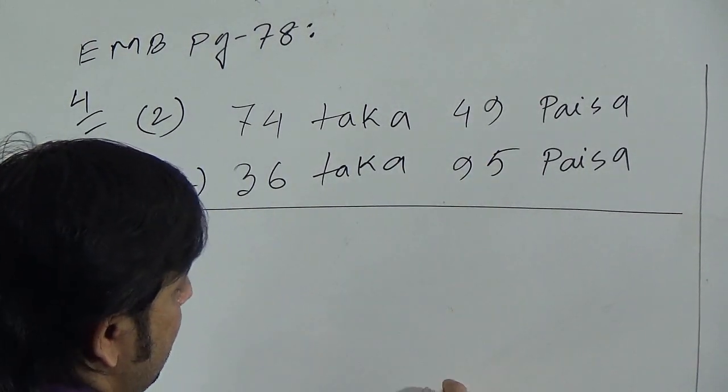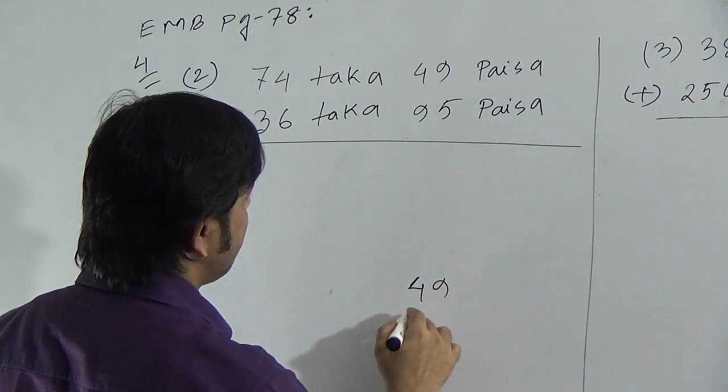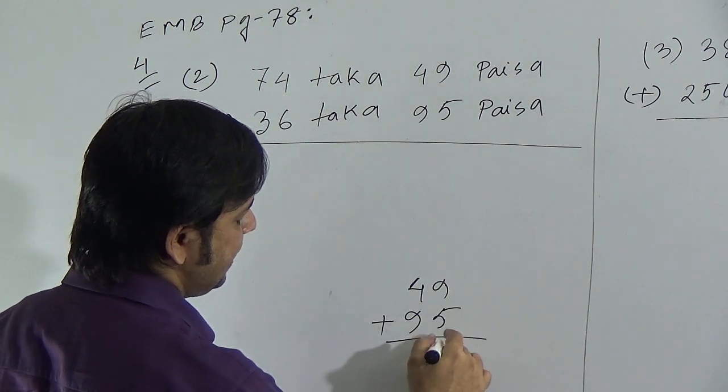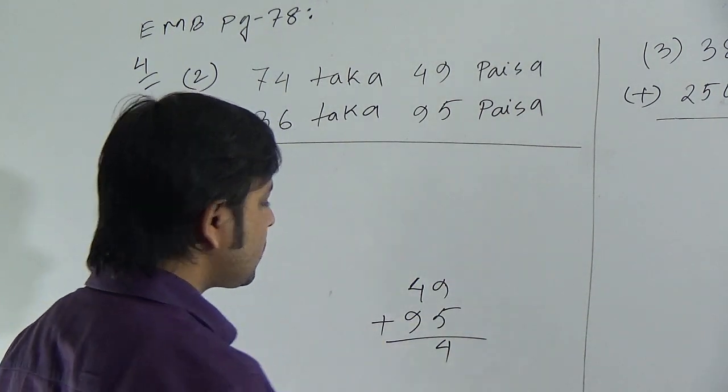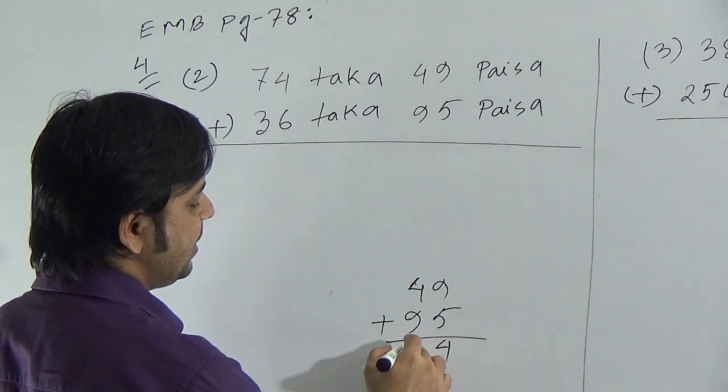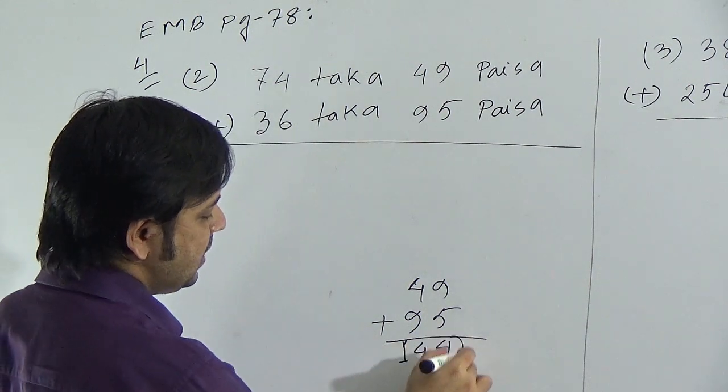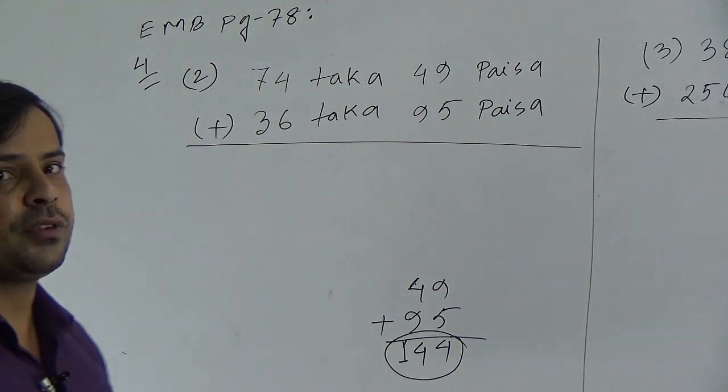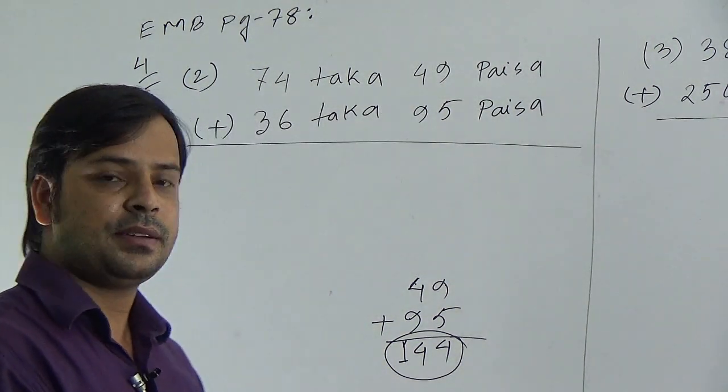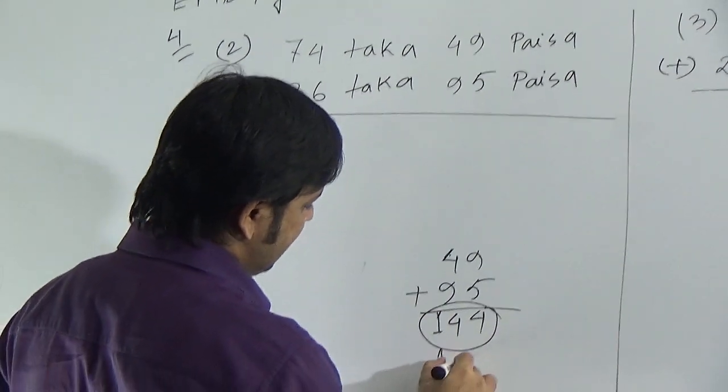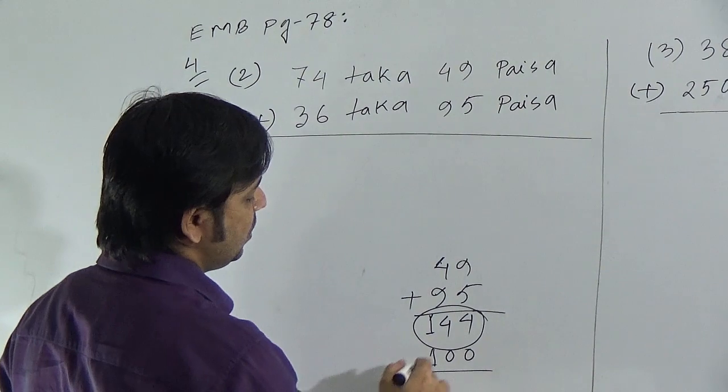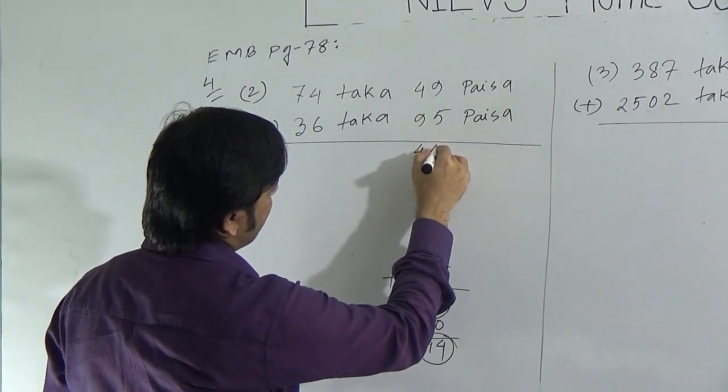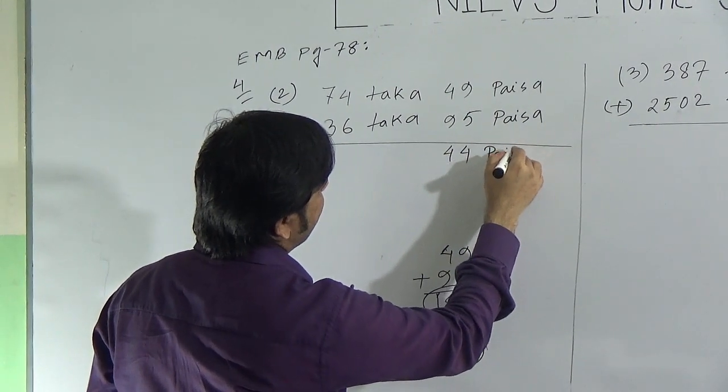To add, at first we have to add paisa with paisa. Here is 49, here is 95. If we add these two, we will get 9 and 5 is 14. One left, 9 and 4 is 13 and remaining one, that is 14. Dear students, now observe here. Sum of these two paisa is 144 paisa. But you know, 100 paisa means 1 taka. So subtract 100, you will get 44. So in paisa, we have to write 44. 44 paisa.